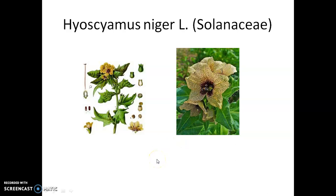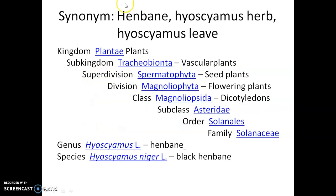Hyoscyamus niger belongs to the Solanaceae family. It is a very important plant. On the left side you can see the herbarium of this particular plant, and on the right side the plant itself with its funnel-shaped flower. The synonym of this plant is henbane, black henbane, and Hyoscyamus leaves.